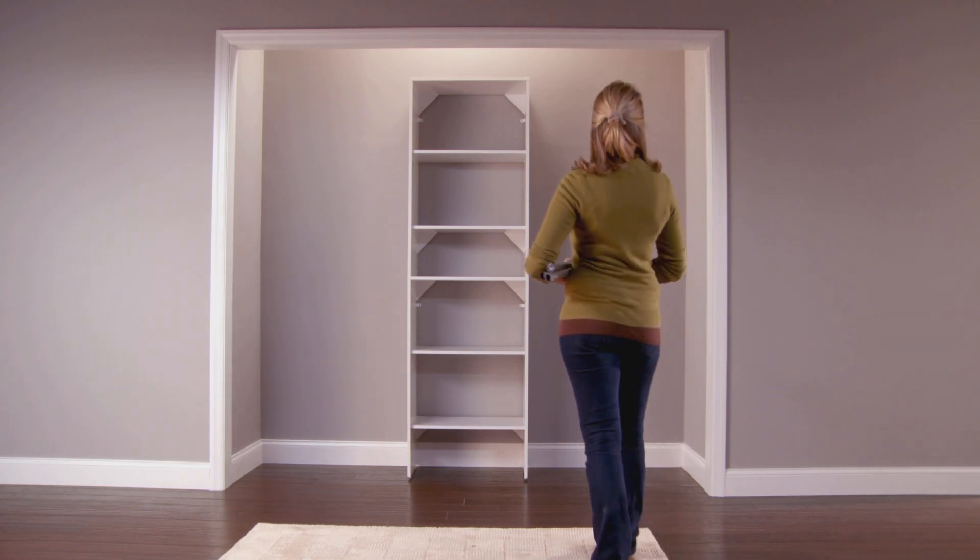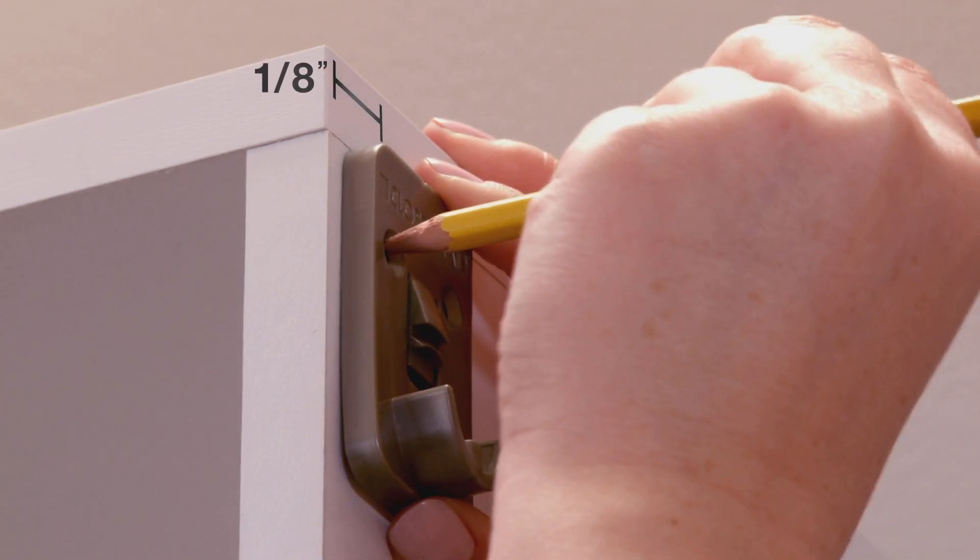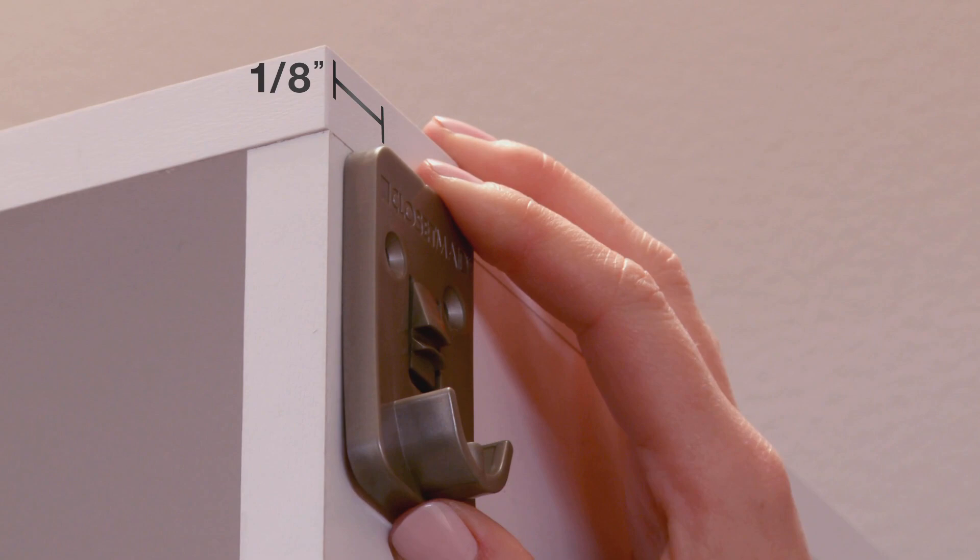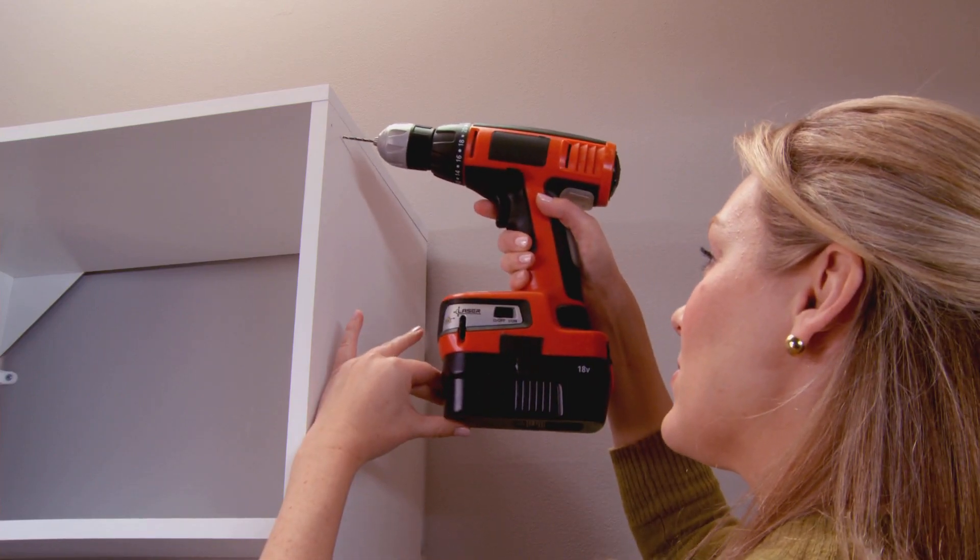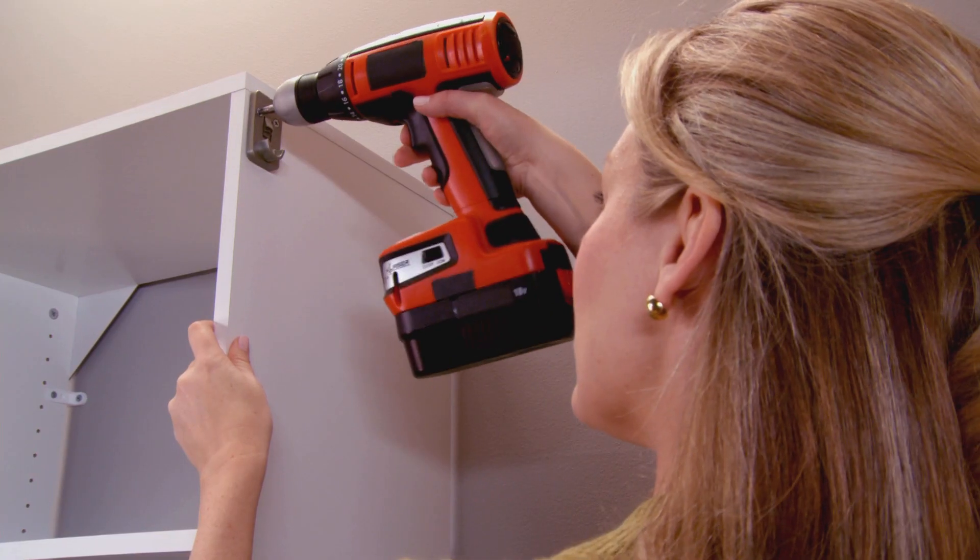Now install the rod brackets and rods. Before doing this, you will need to decide which side you would like to have double hang and which side is for your long hanging clothes. Place the rod bracket under the top shelf one eighth of an inch back from the front edge. Measure and mark the hole locations on the unit. Drill small pilot holes if necessary. Secure each rod bracket with two rod bracket screws.